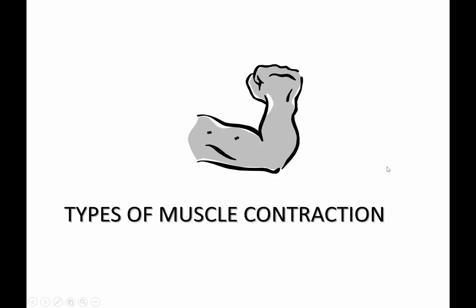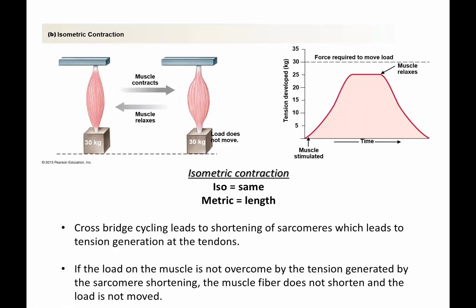We talked about the types of muscle contraction in the lab, but let's revisit those issues. There are two primary types of contraction: isometric and isotonic. Isometric is what I've called the oxymoron of muscle contraction — the statement doesn't quite make sense, since 'iso' means same and 'metric' means length, so 'same length contraction' doesn't make logical sense, but it's what physiologists use.